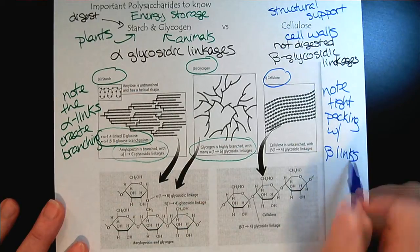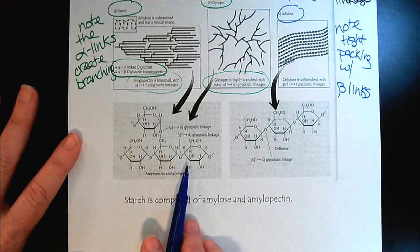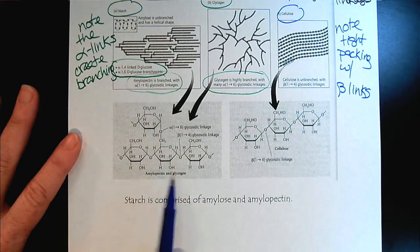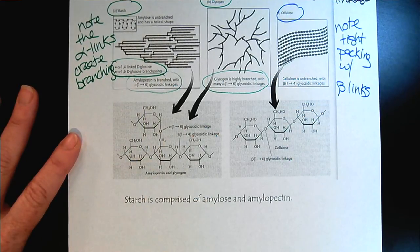Okay. And then if you want to dig in deeper and look, here are the various, now there are some beta linkages in the starch and glycogen, but the dominant linkage is the alpha. And that's the one we're able to break down.